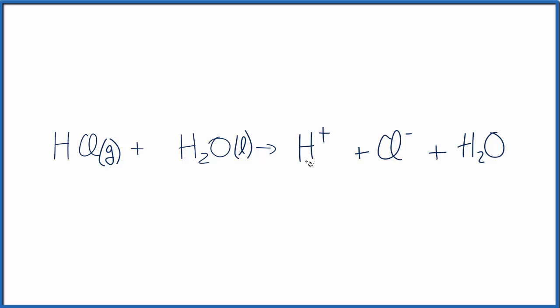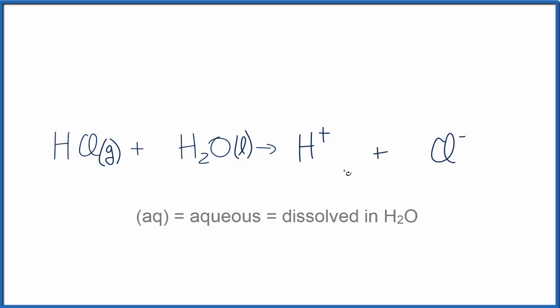But the H+, the hydrogen ion, and the Cl-, they're dissolved in this water here. So we could just call them H+ aqueous and Cl- aqueous. And we do that by putting a little AQ after each of them. So that would be a very reasonable way to write this reaction.